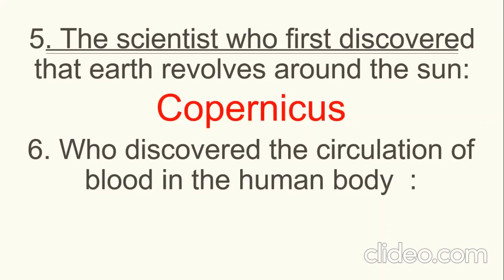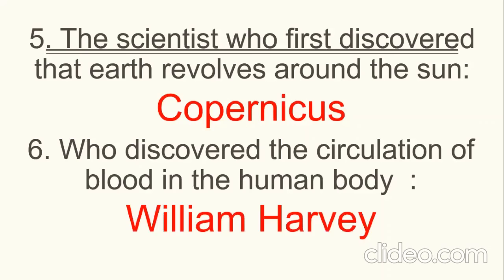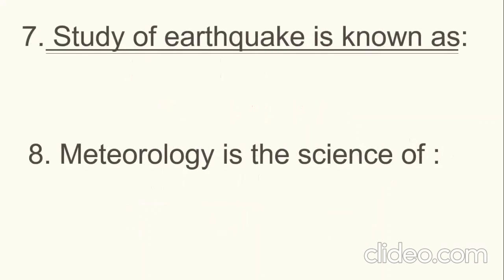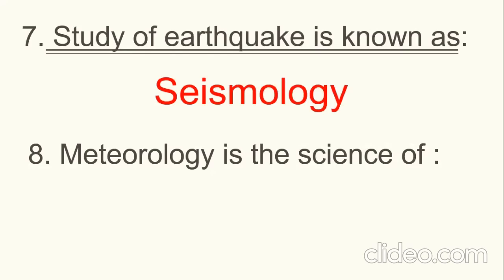Question number five: the person who first discovered that the Earth revolves around the Sun is Copernicus. Question number six: the person who discovered the circulation of blood in the human body is William Harvey. Question number seven: the study of earthquakes is known as seismology.